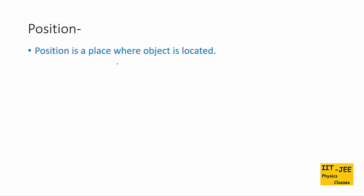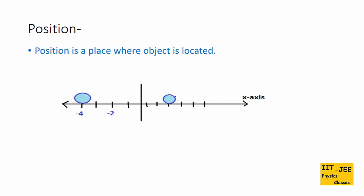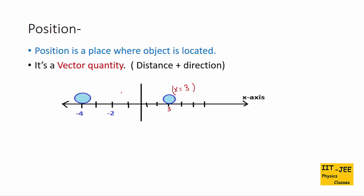What is position? Position is a place where an object is located. Like here, this ball is located at x = 3, so the position of this ball is x = 3. Position is a vector quantity represented by distance plus direction. The distance of this ball from the origin is 3 meters, and it is on the positive x axis, so its position is +3 — the plus sign shows direction. For another ball at distance 4 on the negative x axis, x = −4, where the minus sign shows the direction.